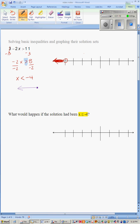But what would have happened if x had been less than or equal to negative 4? The only difference is that we would put a closed circle, because x actually gets to be negative 4 and all the numbers less than. And so that's the only difference.